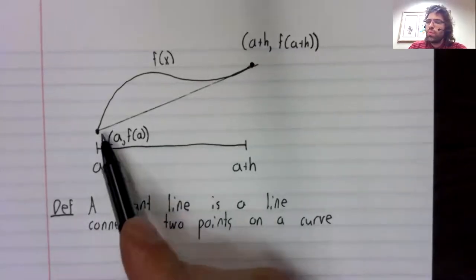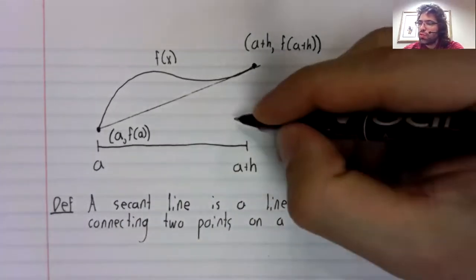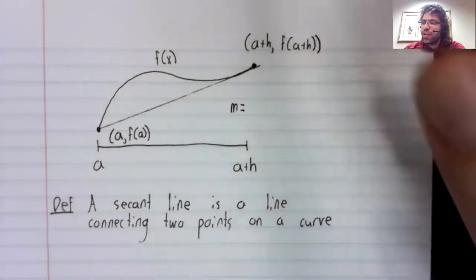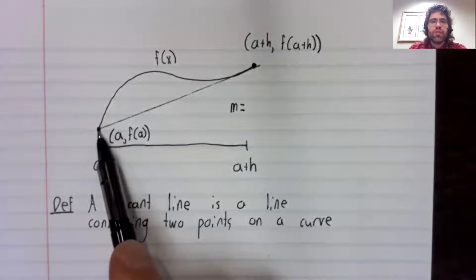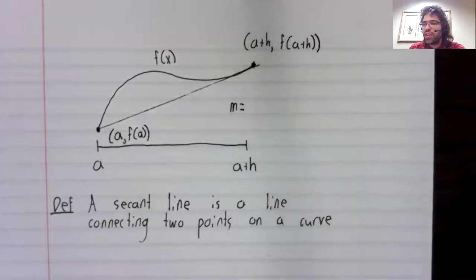The slope of a line is the rise over the run. If this is the point a comma f of a, and this is a plus h comma f of a plus h, the rise over the run.